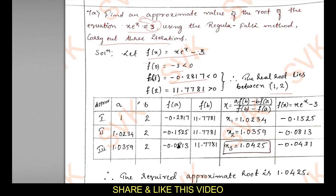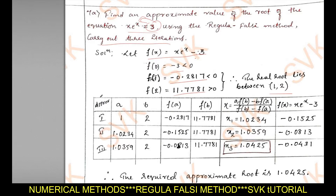Consider these two values and construct a table. The columns represent: approximation, a, b, f(a), f(b), then the Regula Falsi formula x = [a·f(b) − b·f(a)] / [f(b) − f(a)], and finally f(x). Set a = 1, b = 2, f(a) = −0.2817, f(b) = 11.7781. Substituting into the formula gives x₁ = 1.0234.